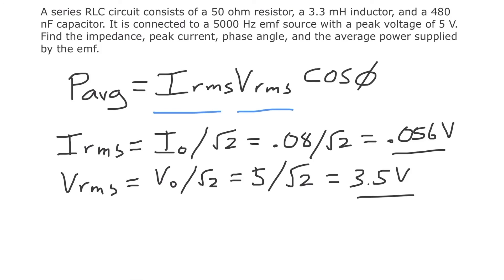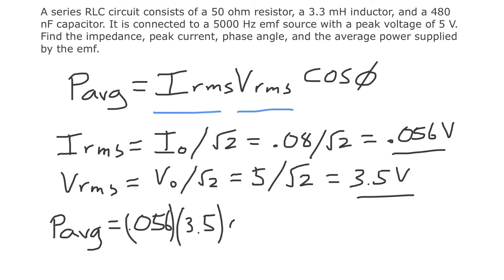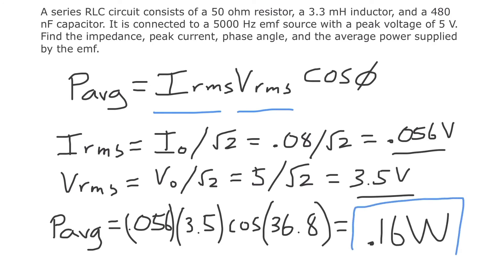Now we plug these values into the average power formula: P average equals 0.056 times 3.5 times cosine of 36.8 degrees. That gives an average power of 0.16 watts. This is the average power that the EMF supplies to this RLC circuit.